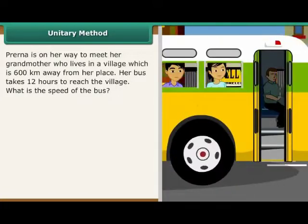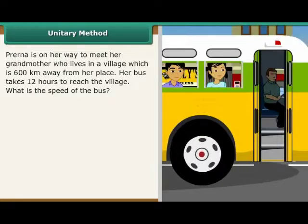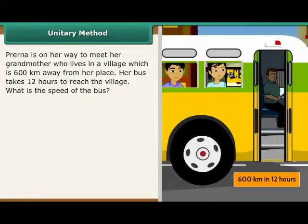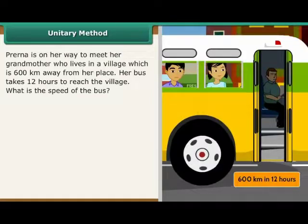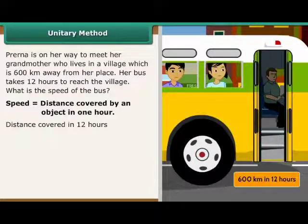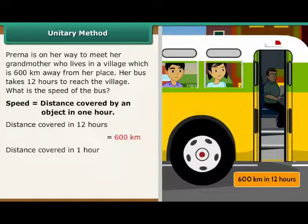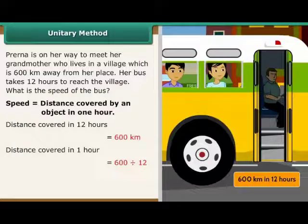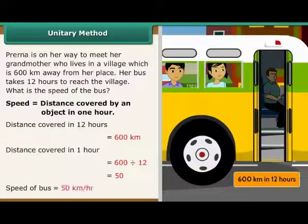Unitary method. Prerna is on her way to meet her grandmother who lives 600 km away. Her bus takes 12 hours to reach the village. What is the speed of the bus? Speed is the distance covered in 1 hour. Distance covered in 12 hours is 600 km. Distance covered in 1 hour is 600 divided by 12, which equals 50. Therefore, the speed of the bus is 50 km per hour.